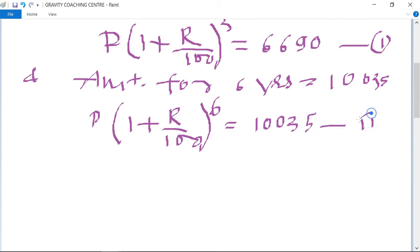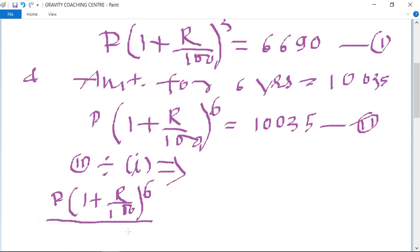Now we divide the second equation by first, so we get P(1 + R/100)^6 divided by P(1 + R/100)^3 equals 10,035 divided by 6690.